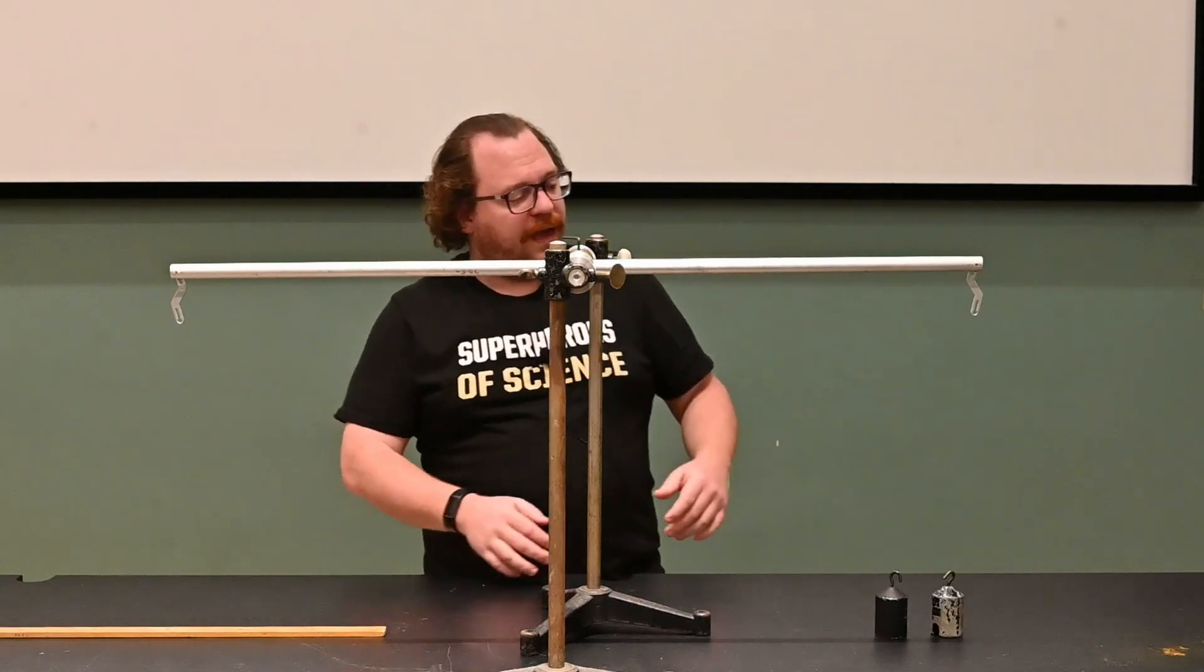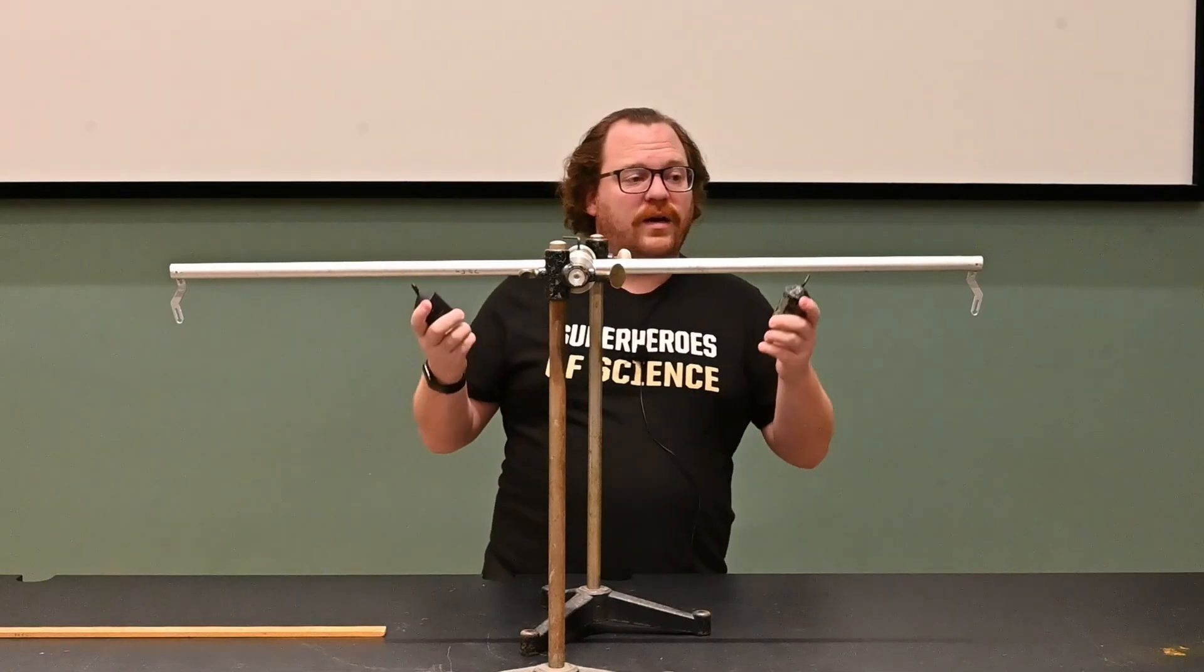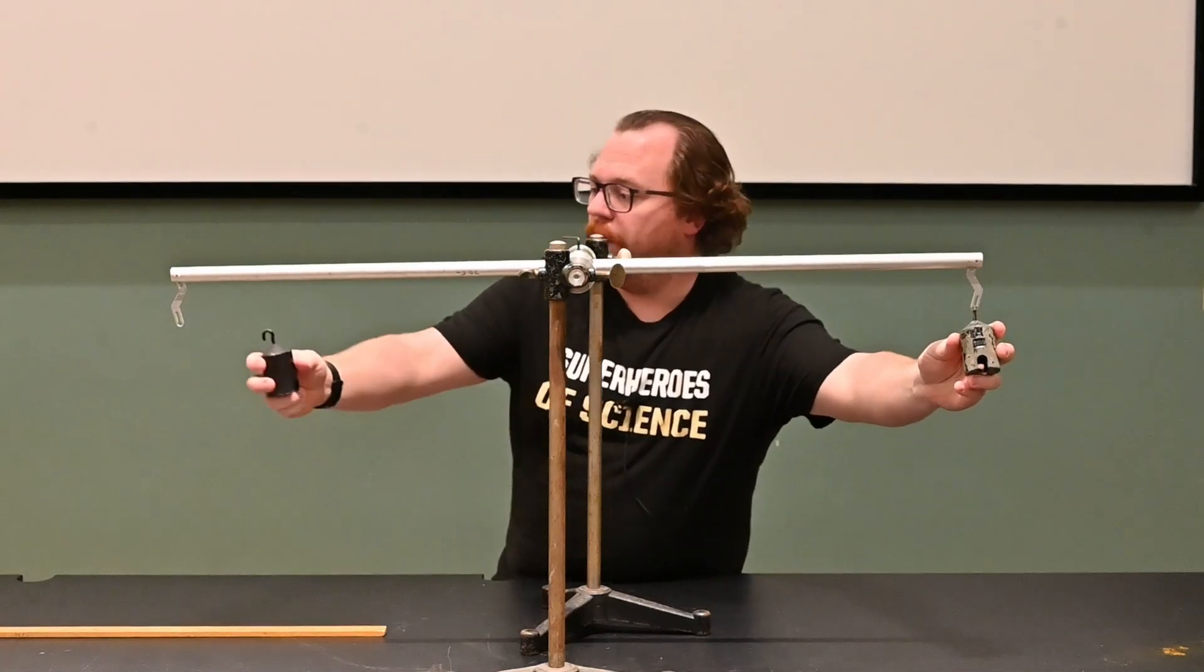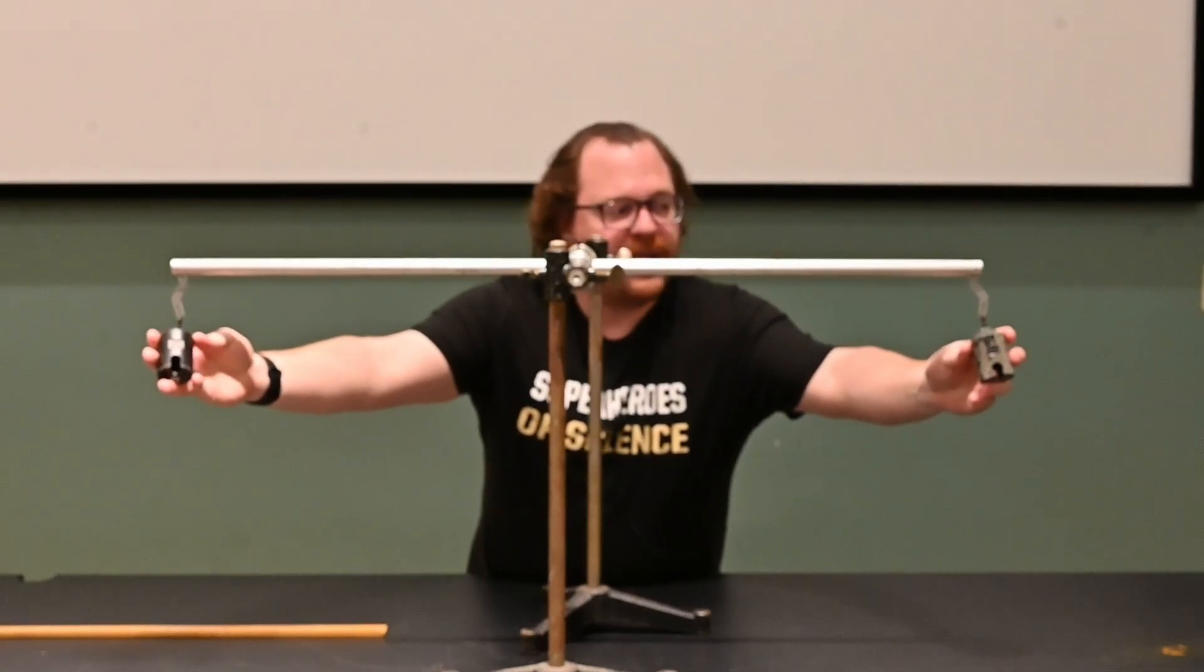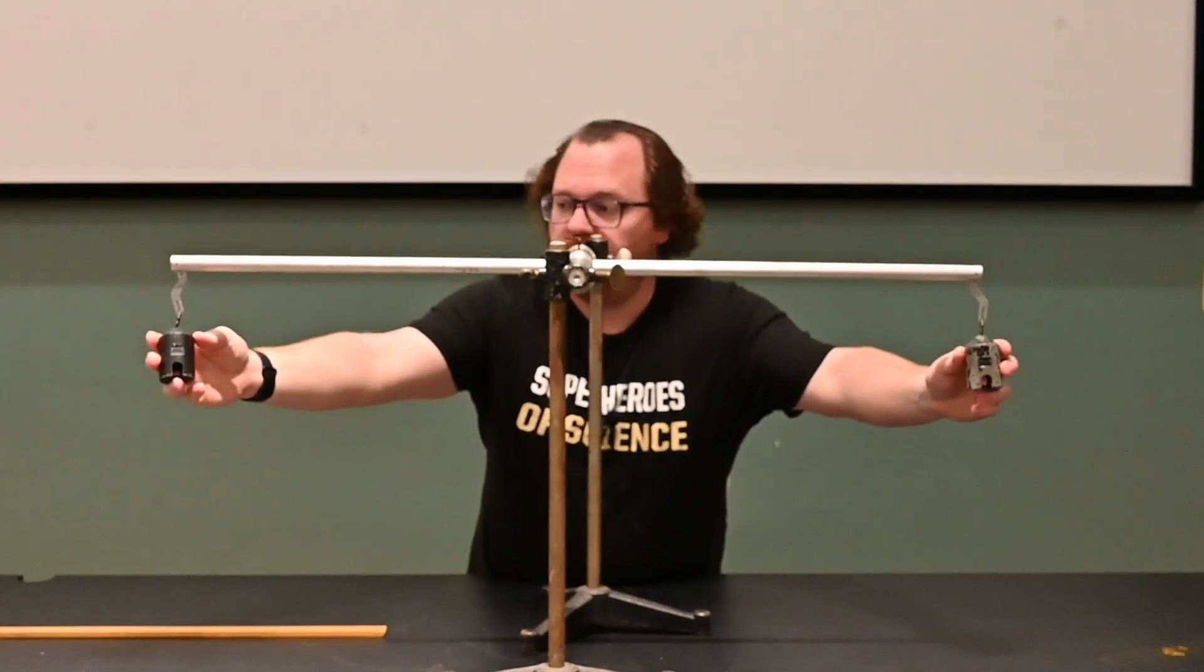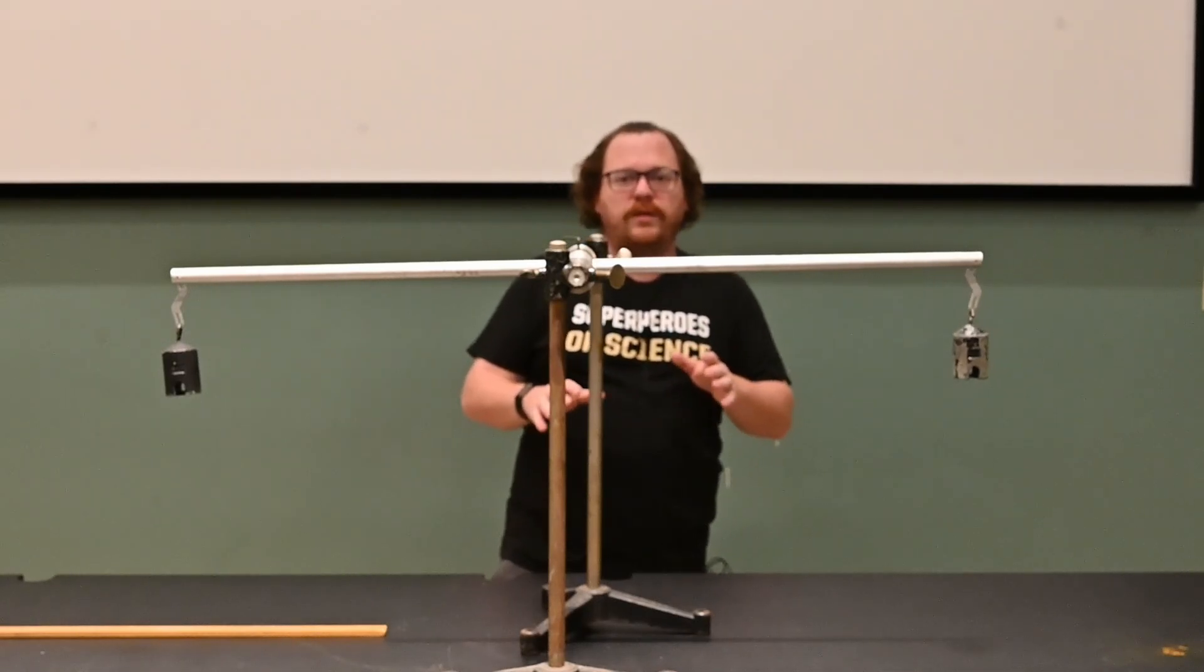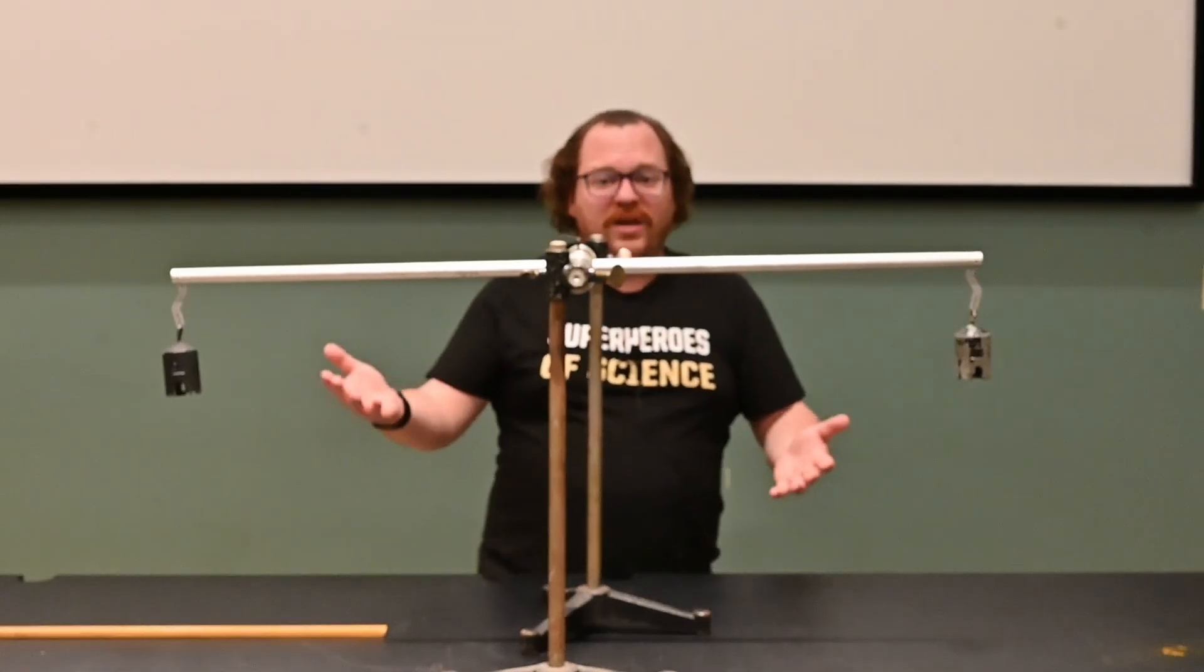I'm going to set this up in the most simple configuration. I'm going to attach two masses of equal size to both hooks. These are both 500 gram masses. If I attach 500 grams to both sides, and right now I'm holding the weight off, think about what you would expect if I let them go. If that's not what you were expecting, then this is going to be a really long demonstration for you.